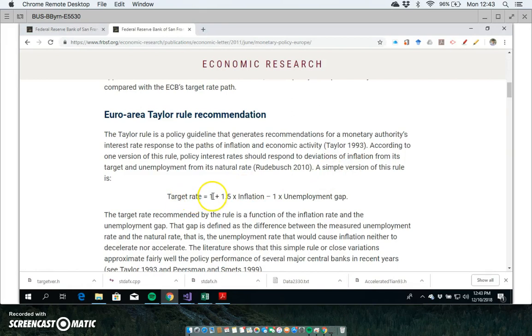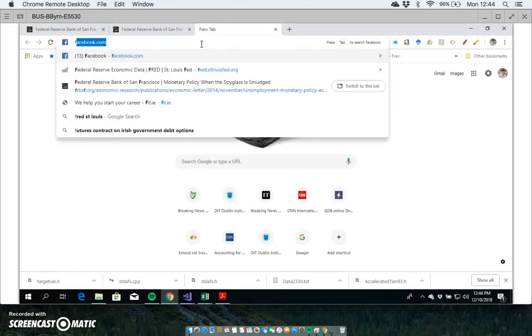This is going back to a 2010 Rudebusch paper, and a simple version of this rule is that target rate equals 1 plus 1.5... We could try to run some basic regression estimates where we set up the fed funds rate. I'm going to go with not the ECB target rate path but actually the fed funds rate, and I'm going to see how this rule or how this policy rule or guidance compares against actual policy implementation for the Greenspan Fed.